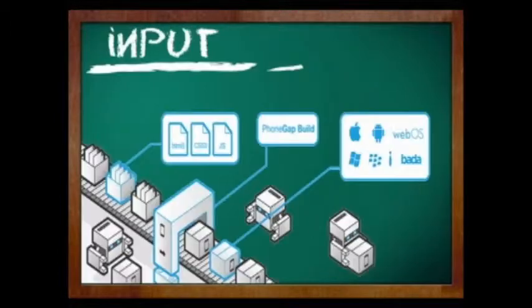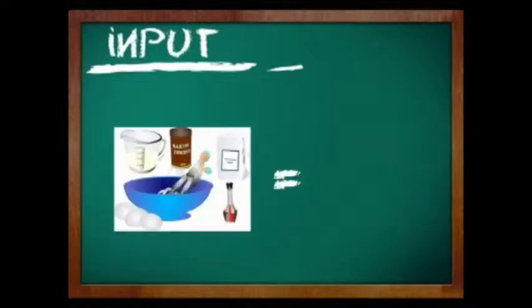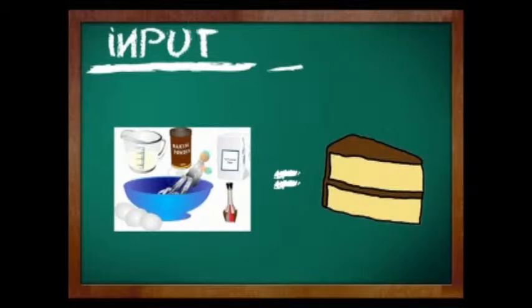The third one is the input. It is the domain of the algorithm, which could be zero or more quantities. This is the data to be processed in order to achieve the desired output. It is like the sugar, egg, oil, baking powder, chocolate, and milk in order to create the chocolate cake.